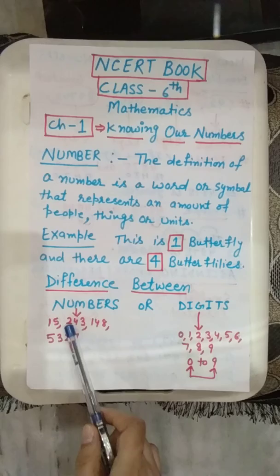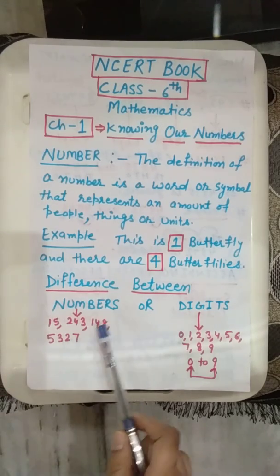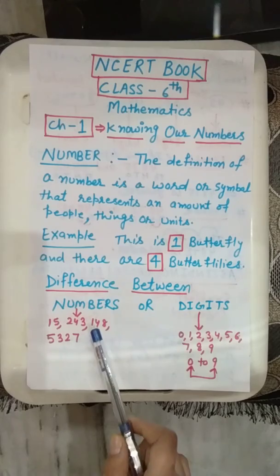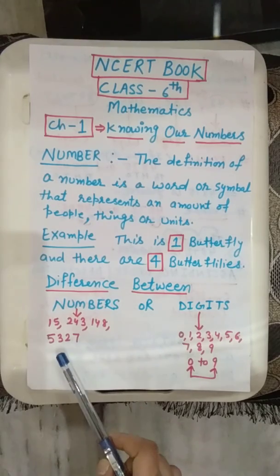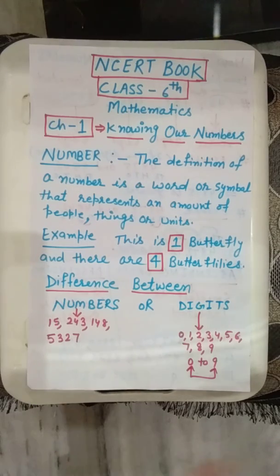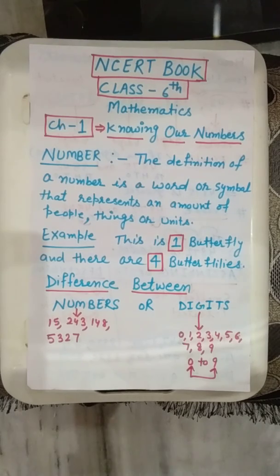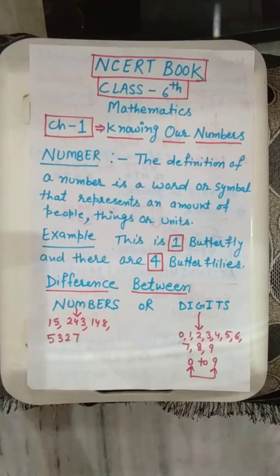For example, 243 has 3 digits and is a number. Similarly, 5,327 is also a number. So students, digits means a single numerical symbol between 0 to 9. And a number is a string of one or more digits.